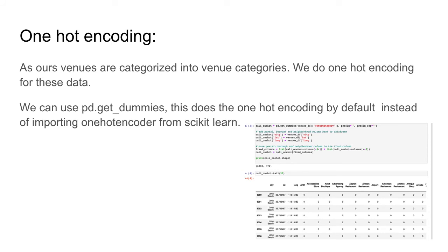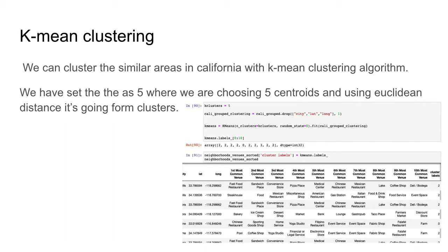Once we get the venue data, the venues are categorical data in text format. For further computation, we need to convert them into binary numbers using one-hot encoding. We can do this using pd.get_dummies — by default it performs one-hot encoding. We could also use the scikit-learn preprocessing library, but the pandas library handles it for us.